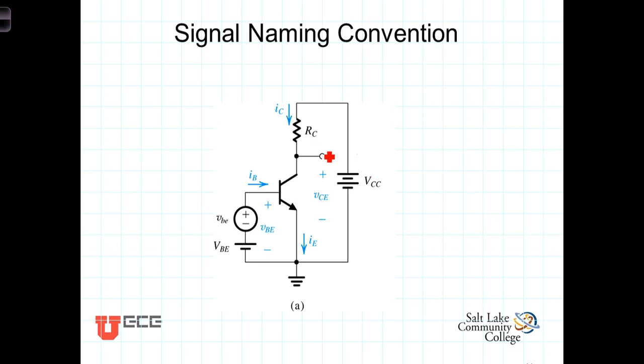Now, every voltage and current within this circuit will have both a DC component and a time-varying AC component. To discuss these kinds of situations, we need vocabulary and rules for naming the variables that allow us to be specific and very intentional in our communication.